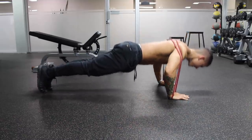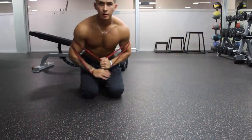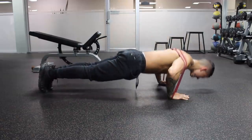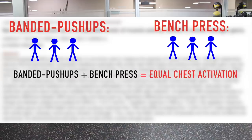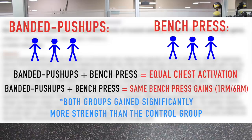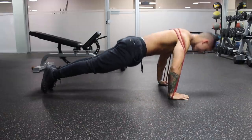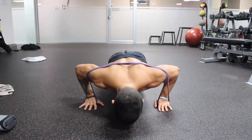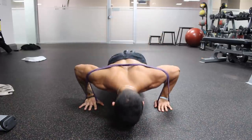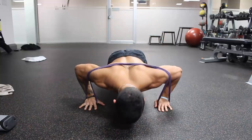This exercise is kind of a finishing movement, but something I highly recommend you include in your routine. Put a band around your back and hold each end of the band with your hands, then perform regular push-ups with the added resistance. A study by Anderson et al. compared banded push-ups with the bench press, having one group perform only banded push-ups for 5 weeks and another perform only bench press for 5 weeks. The researchers found that banded push-ups exhibited nearly identical chest activation compared to the bench press, and both groups resulted in very similar bench press strength gains over the 5 weeks. An easy way to progress this exercise is by using bands with higher resistance as you get stronger.